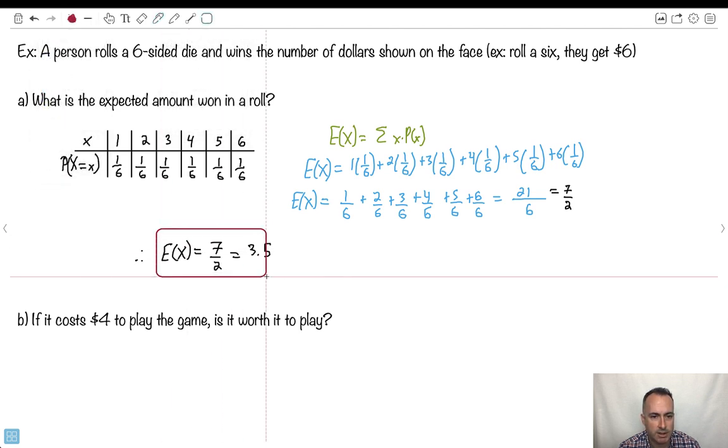So you might wonder, like, wait, aren't probabilities, don't probabilities have to be less than one? Yeah, the probabilities do, but this isn't probability we're doing. Now, we're using probabilities, sure. There's probabilities within this, but the expected value, there's nothing that says expected value can't be greater than one. In fact, it often is. So what this really tells you is that you expect to win. This is maybe the conclusion, right? You expect to win about $3.50 each game. This is what you would be expected to win.